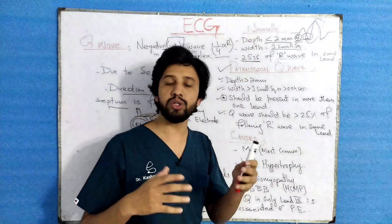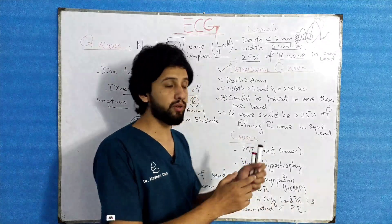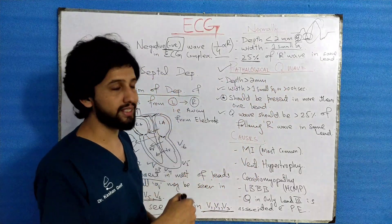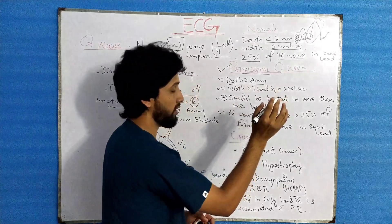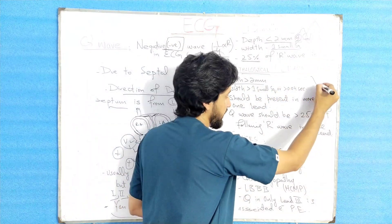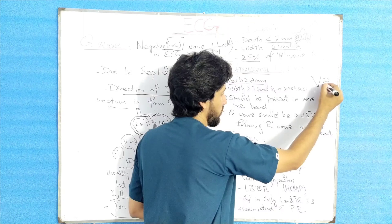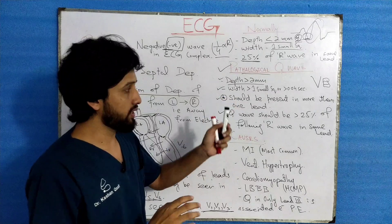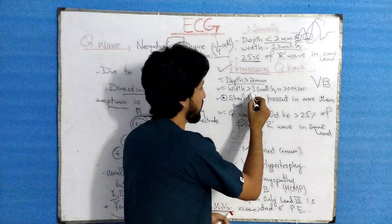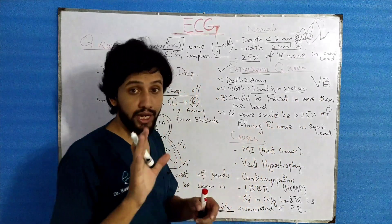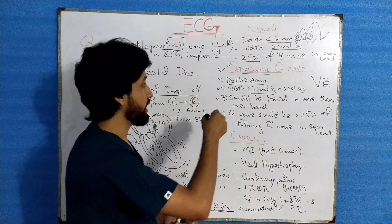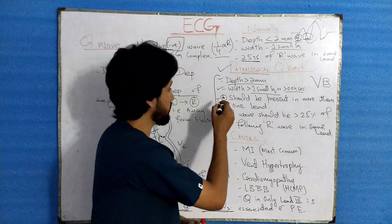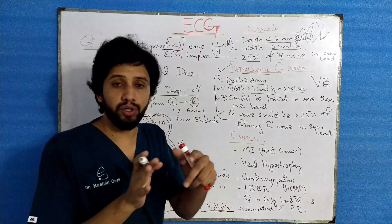These are the three points to keep in mind before saying that a Q wave is pathological. The Q wave is called pathological whenever its depth is greater than 2 mm — meaning greater than 2 small square boxes on the ECG paper. Next, the width should be greater than one small square box or greater than 0.04 seconds — these criteria indicate a pathological Q wave.